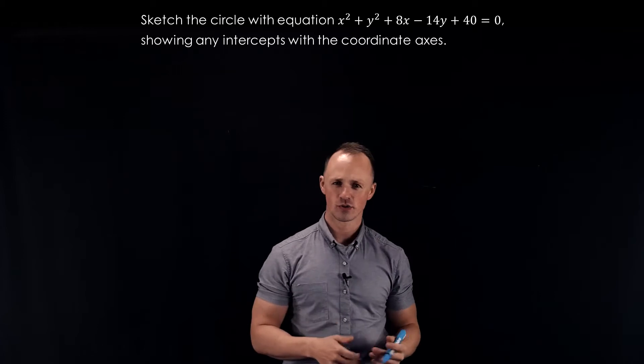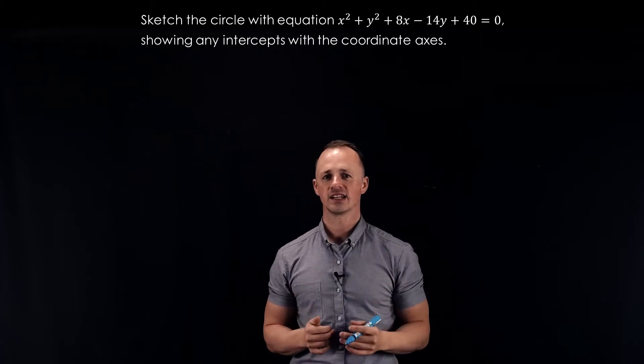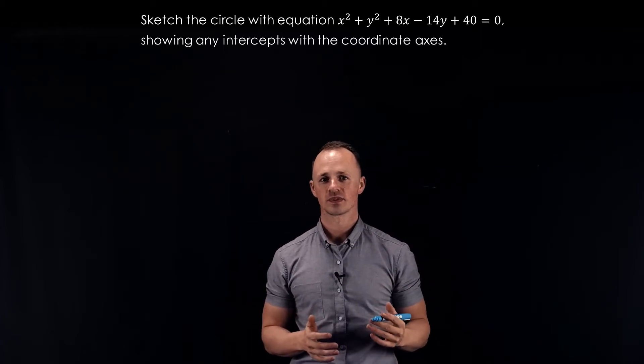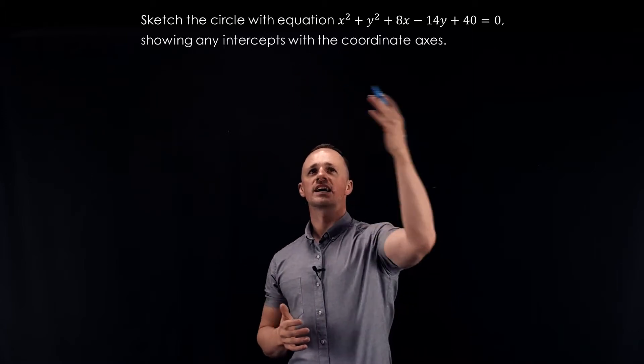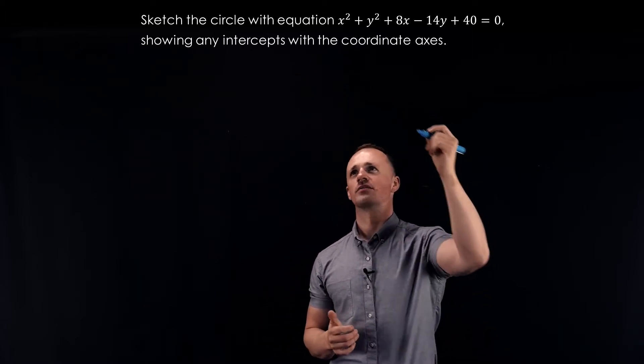Okay, in this example, we're going to sketch the circle with this equation showing any intercepts with the coordinate axes. So to start with, we're going to take our original equation and write it in completed square form.